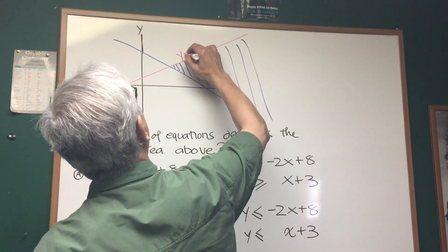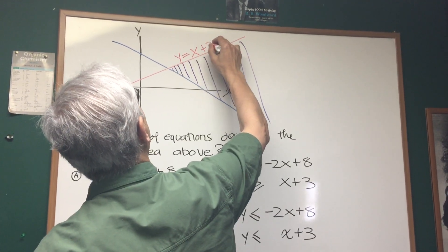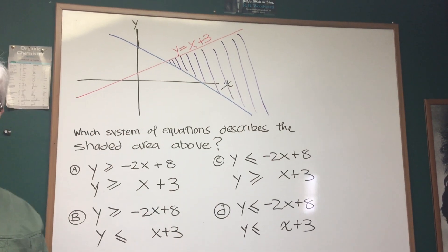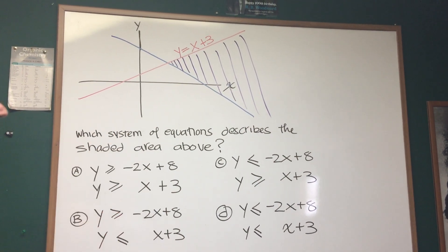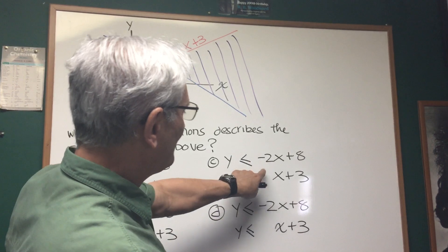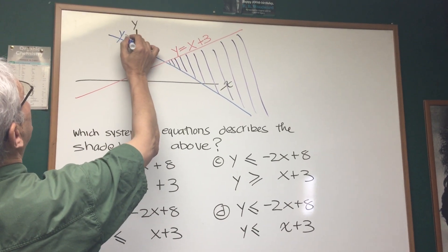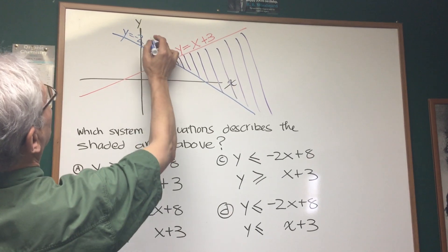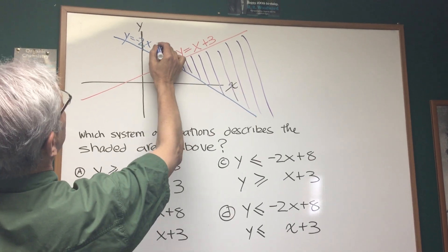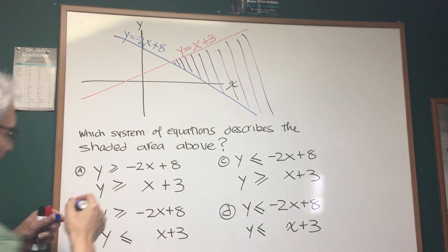So I know that that is the equation for the positive, the line of positive slope ascending. Therefore, the line with a negative slope, negative 2x plus 8, is the equation for the blue line that's sloping down, negative 2x plus 8.